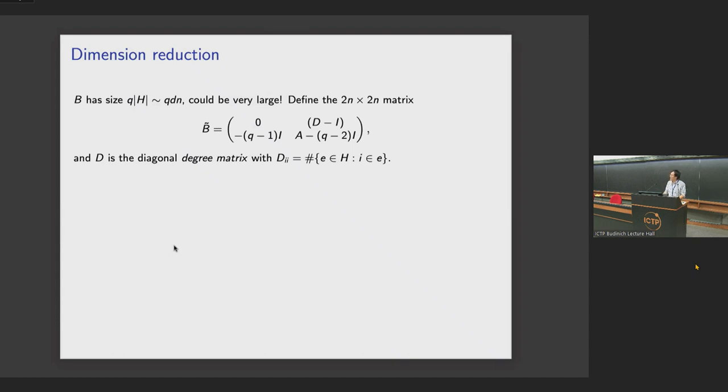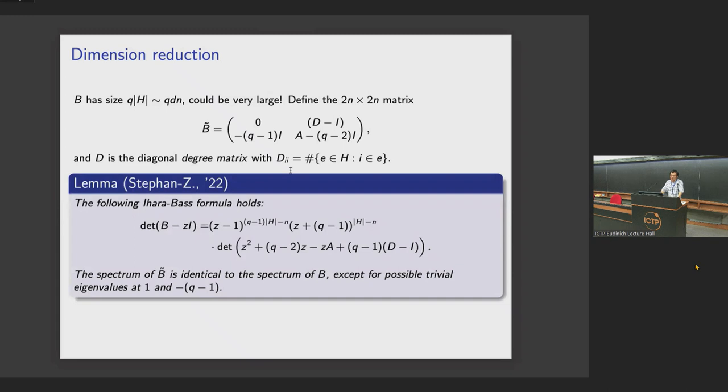There is a nice way to do a dimension reduction to make this problem in a smaller size. We can define a 2n by 2n matrix b_tilde that forms a two-block structure where you need to calculate D, which is the diagonal degree matrix, and A, which is the adjacency matrix we defined before. It turns out that there's a nice connection between the non-backtracking operator B and this operator b_tilde by the following Ihara-Bass formula. This formula tells you the eigenvalue of B, which is recorded in the characteristic polynomial, can be factored as some trivial eigenvalues, either 1 or minus q minus 1, and eigenvalues of b_tilde. So if we care about informative eigenvalues, we can just compute eigenvalues of b_tilde. That makes our problem easier. This Ihara-Bass formula was discovered in 1992 by Bass for graphs, and we generalize it to hypergraphs.